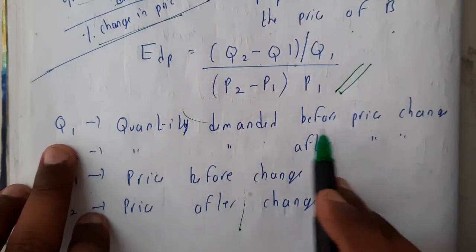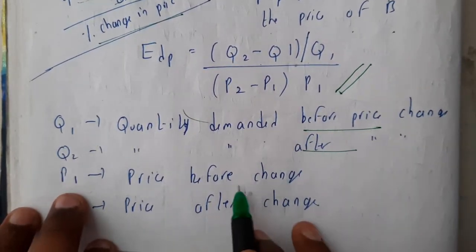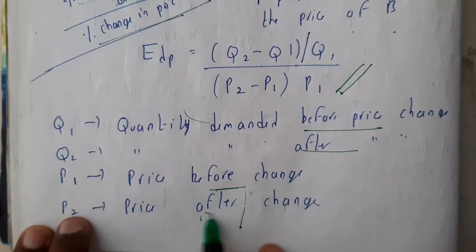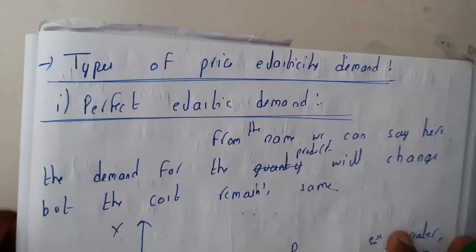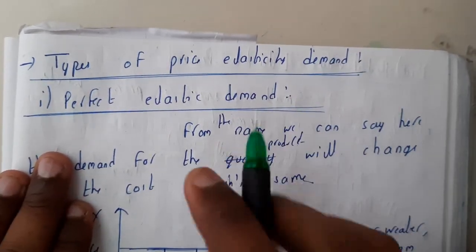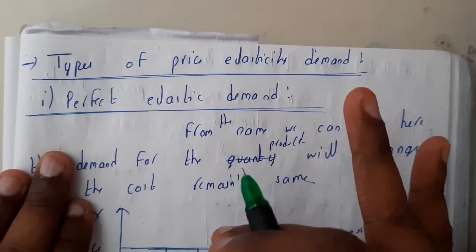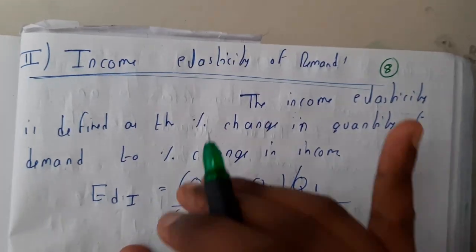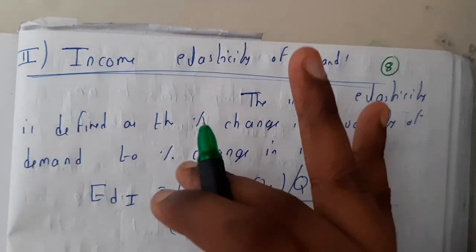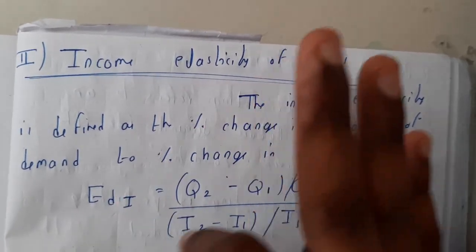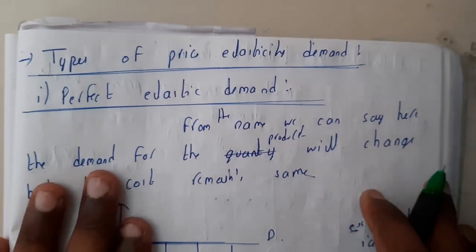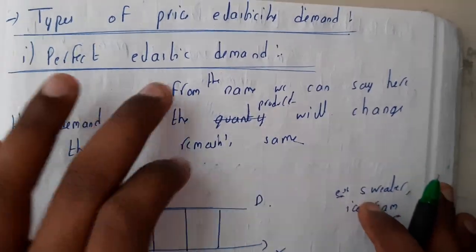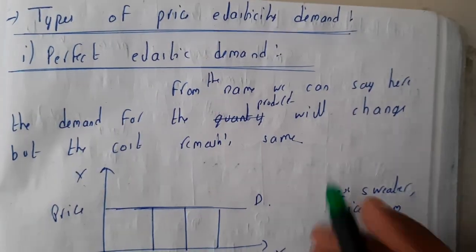The variables used are: q1 is before and q2 is after quantity; p1 is before and p2 is after price. Quantity change over price change gives price elasticity of demand. Price elasticity of demand is also of five different types: perfect elasticity, perfect inelasticity, relatively elastic, relatively inelastic, and unitary elasticity.